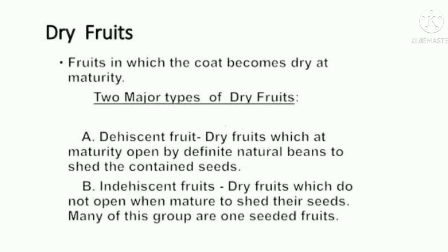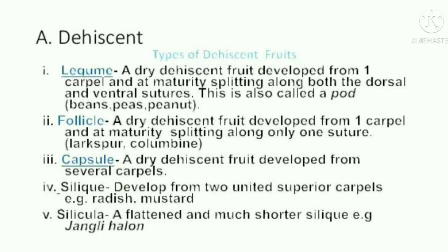Dry Fruits: fruits in which the wall becomes dry at maturity. Two major types of dry fruits are dehiscent and indehiscent. Dehiscent fruits, at maturity, open by definite natural means to shed the contained seeds. Legume: a dry dehiscent fruit developed from a carpel and at maturity splitting along both the dorsal and ventral sutures. This is also called a pod.